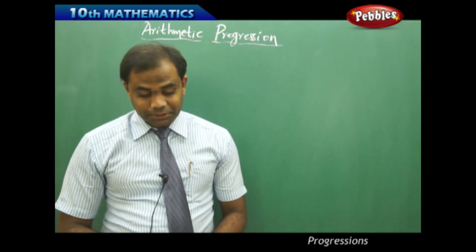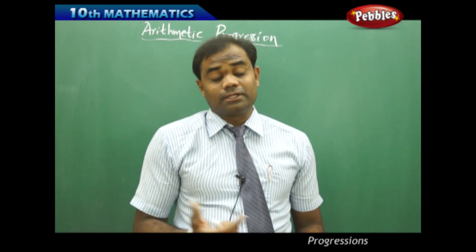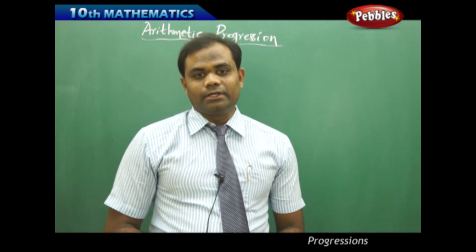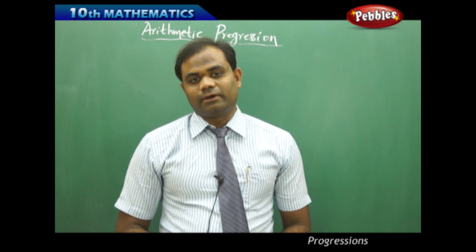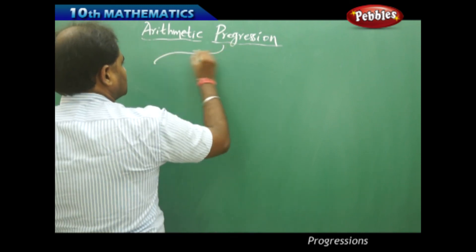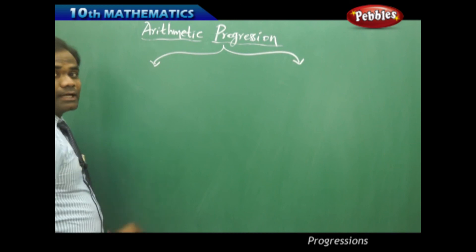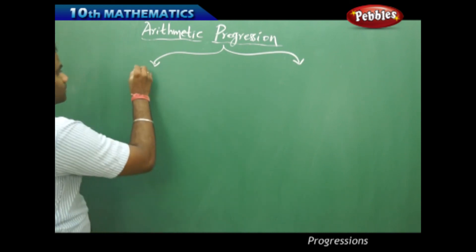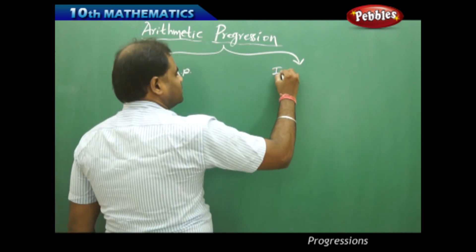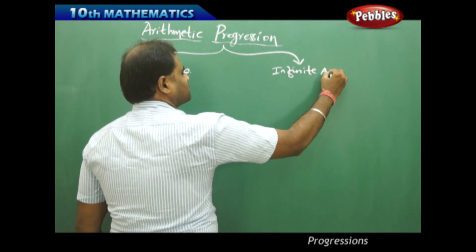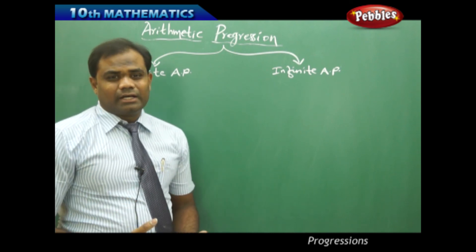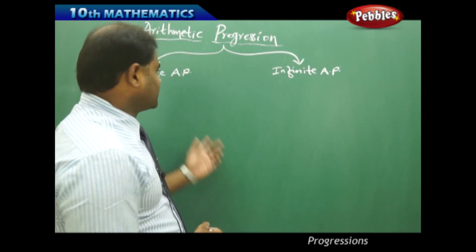Now that we have seen the definition of arithmetic progression with its respective formulae, we move to the types of arithmetic progressions. Generally there are two types identified in mathematics: the finite arithmetic progression and the infinite arithmetic progression.